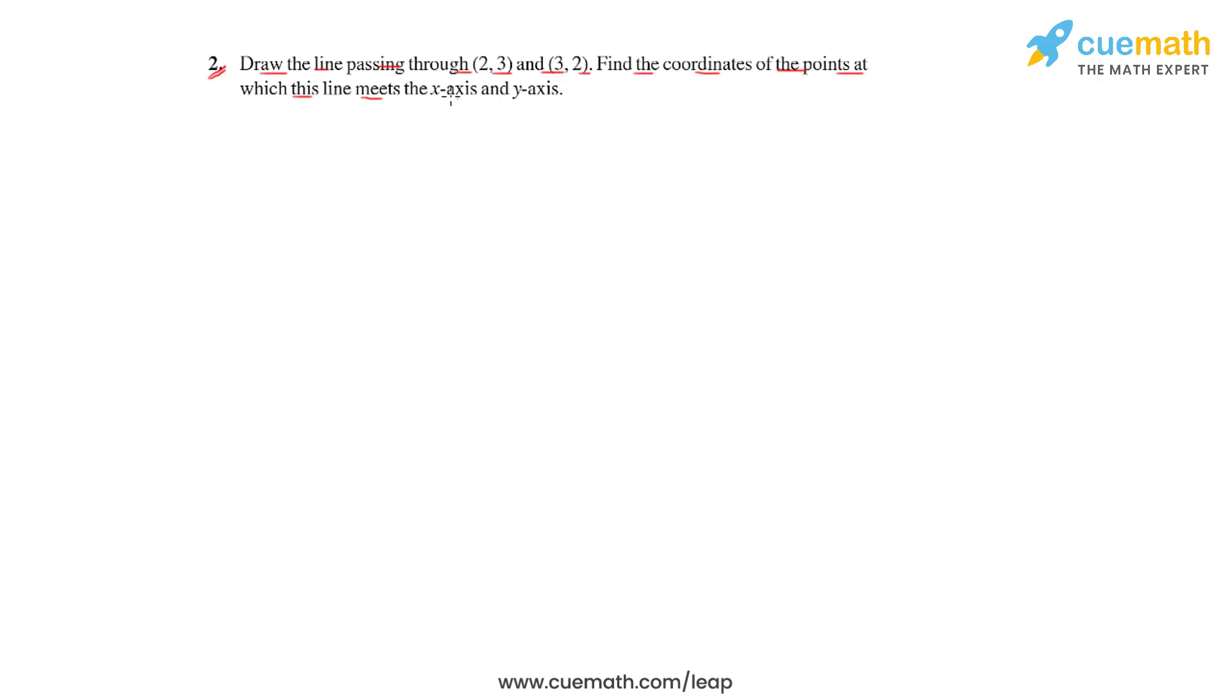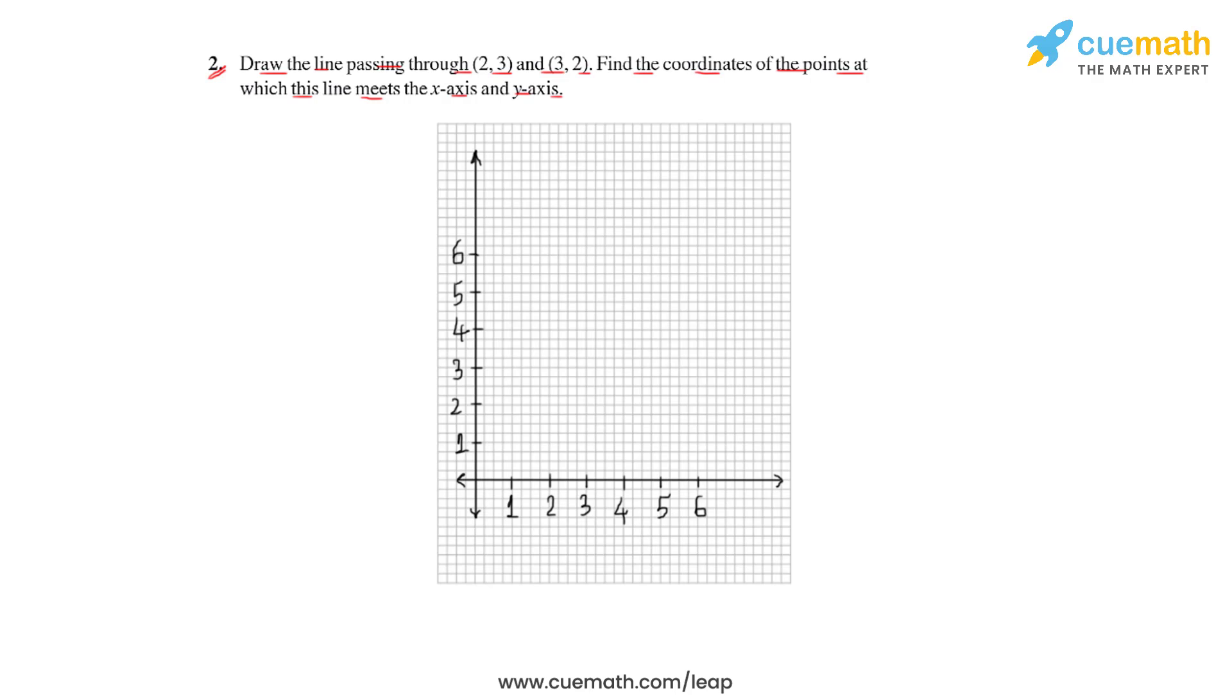Let us first have the graph sheet on the canvas where we see that points are already marked on the axis. This is the x-axis, the horizontal axis.